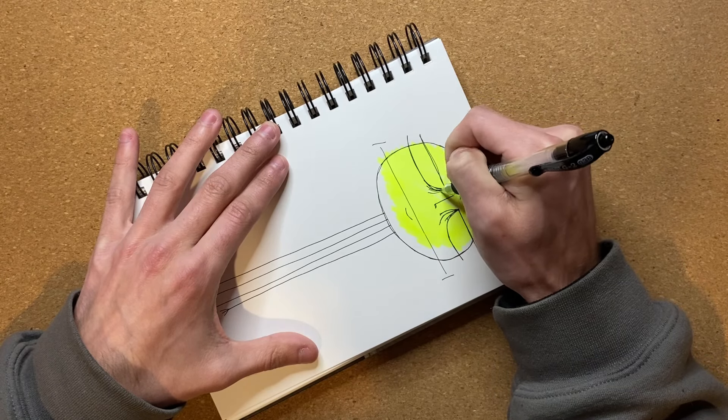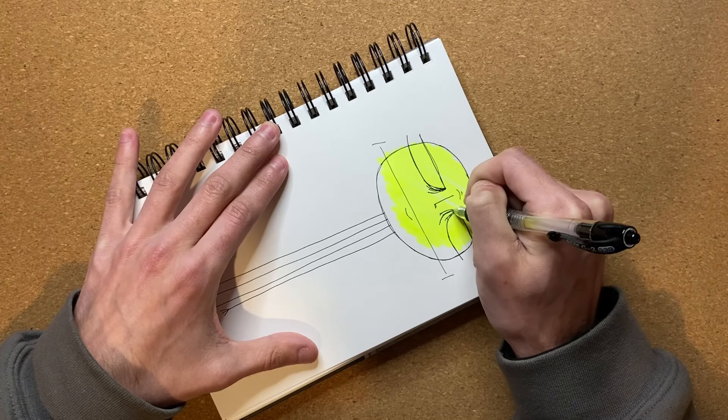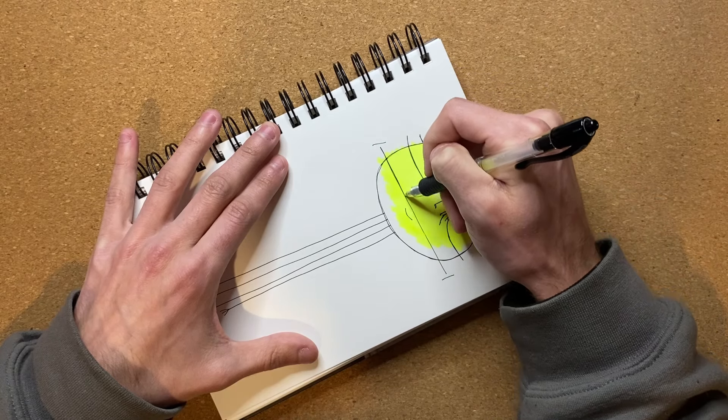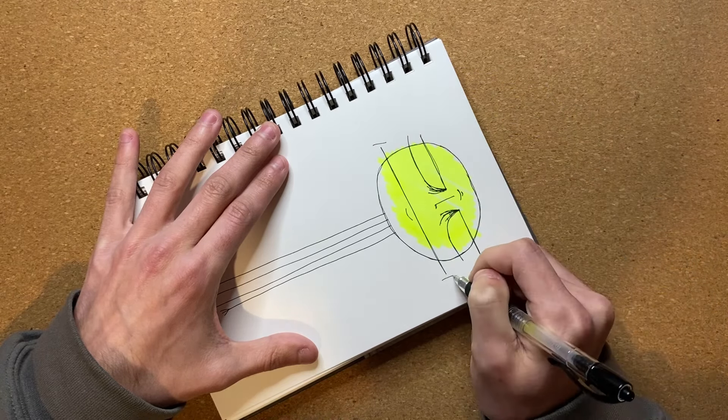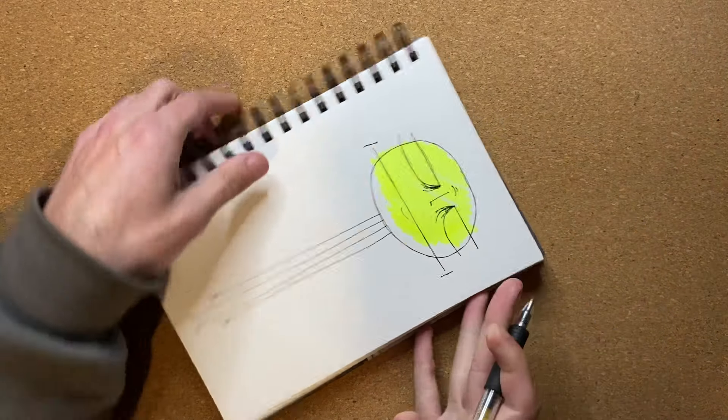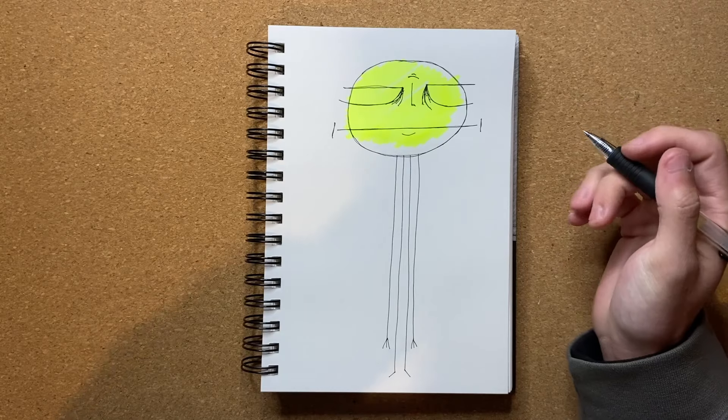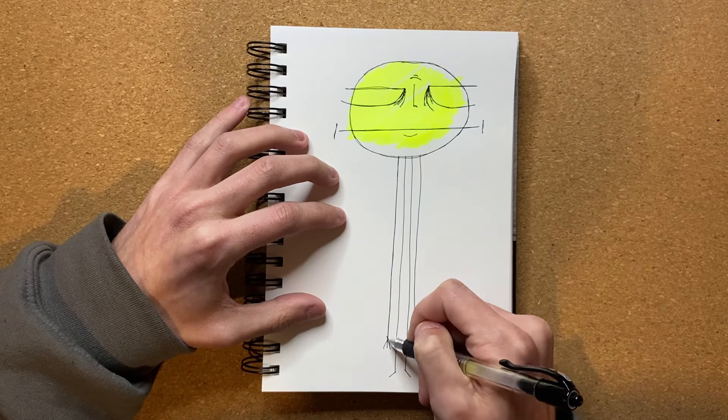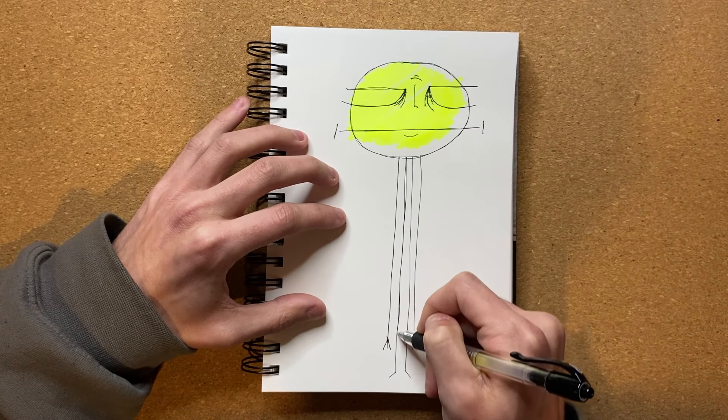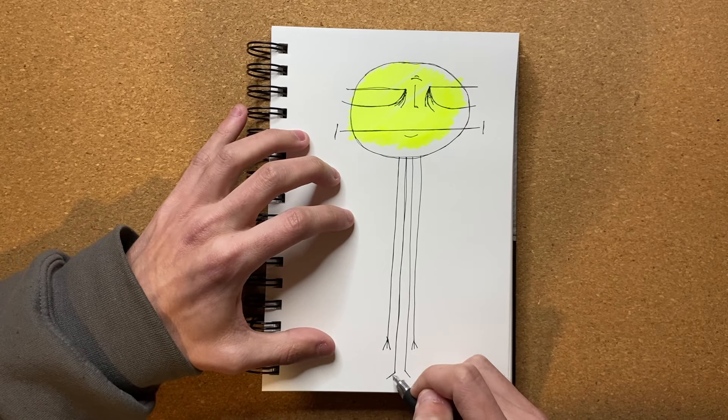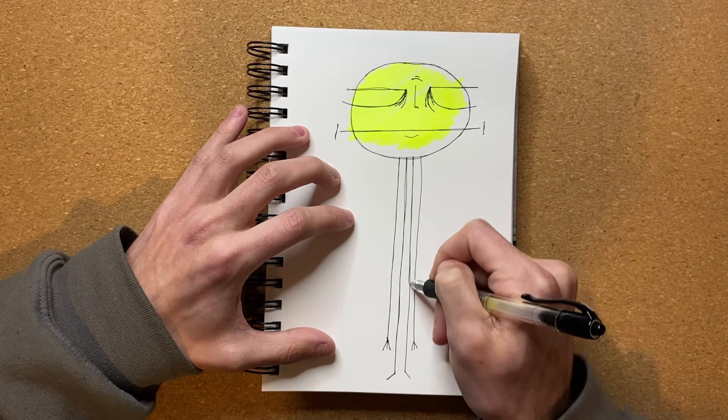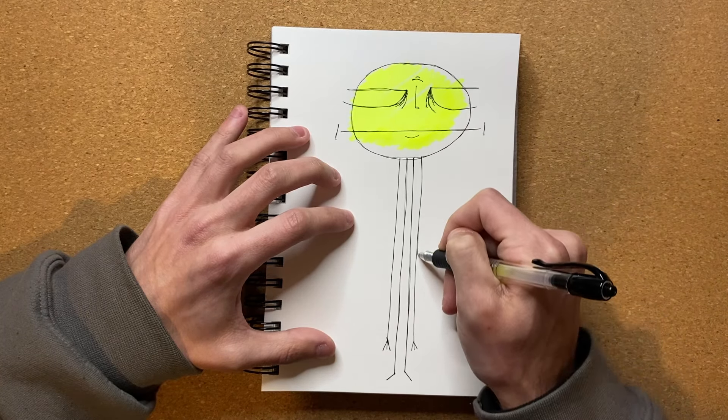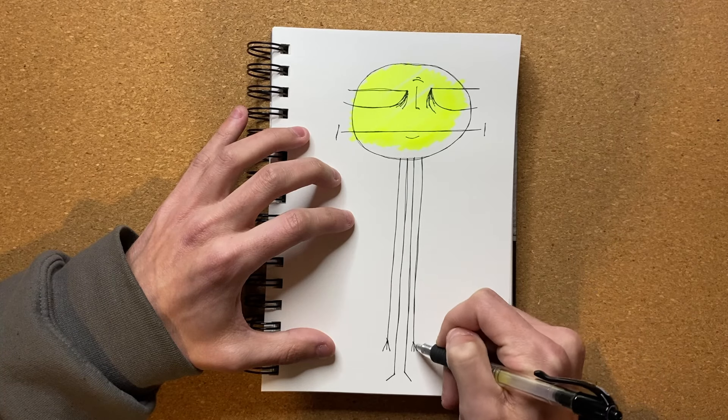Just like that. Whoopsies. Messed that up a little bit, but ain't no biggie. And there we go. So there's the second layer done for the entirety of the head. And now let's go ahead and just do the arms and legs. And there we go.